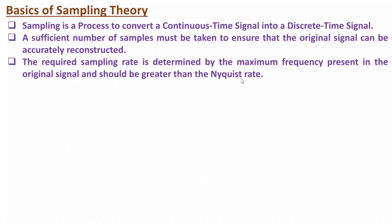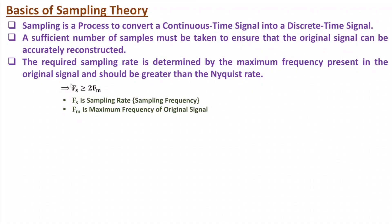If the original signal has a maximum frequency Fm, then the Nyquist rate is 2Fm. The sampling rate Fs equals 1 divided by Ts, where Ts is the interval between two samples. The sampling rate Fs should be greater than or equal to 2Fm, where Fm is the maximum frequency of the original signal.